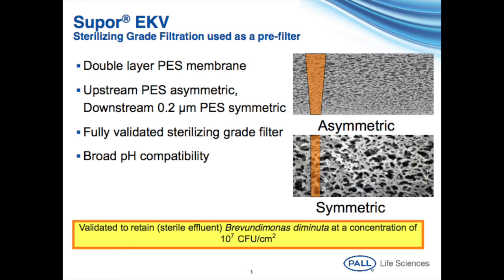What is SUPOR-EKV? SUPOR-EKV is a double-layer polyethersulfone membrane. The upstream layer is asymmetric with a narrowing pore structure as the fluid passes through the membrane. The downstream layer is symmetric with a consistent 0.2 micron-rated pore structure through the membrane.